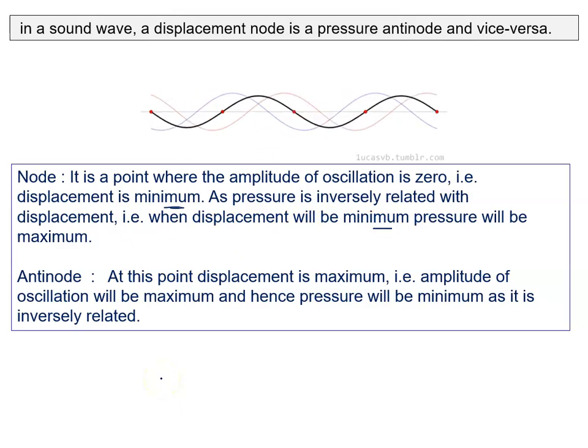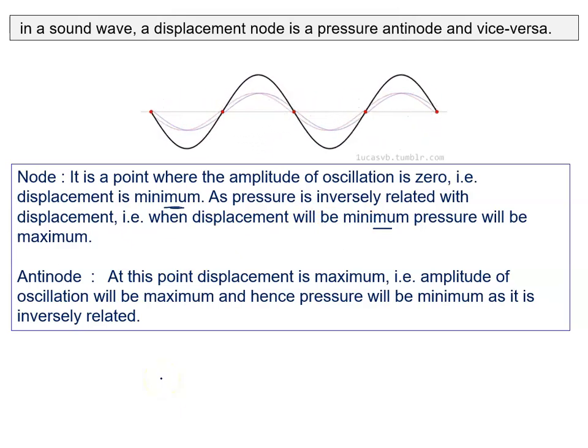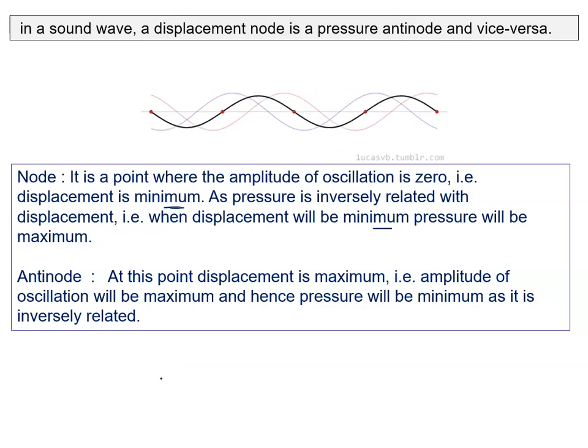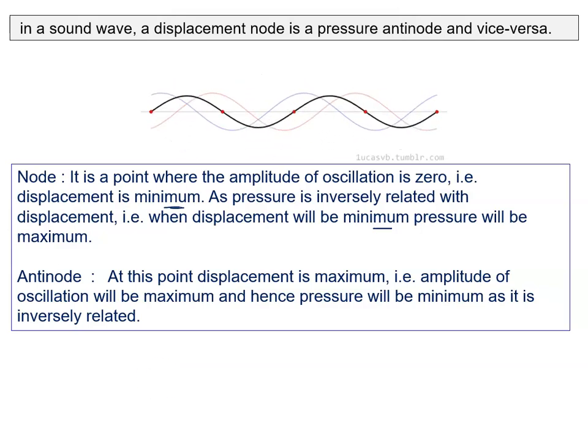An anti-node is a point where displacement is maximum, such that amplitude oscillation will be maximum, and hence pressure will be minimum, as it is inversely related.